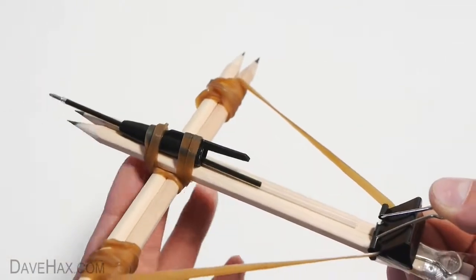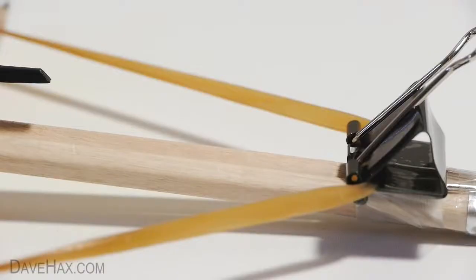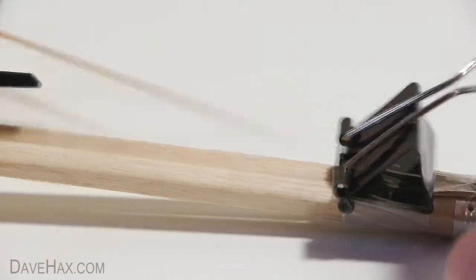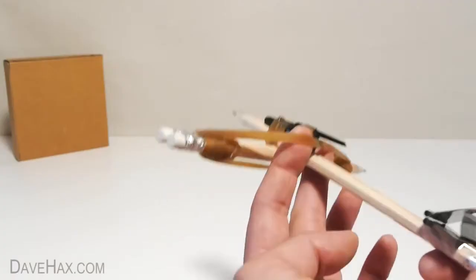If you find the elastic band starts riding over the top of the arrow, try fixing some tape here so the arrow sits slightly higher. Or you could try firing a slightly larger arrow.